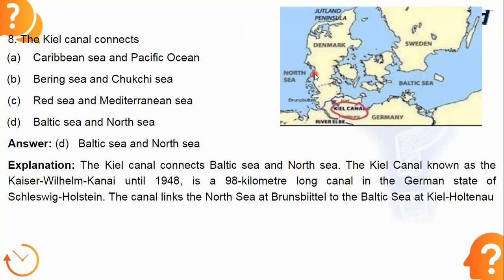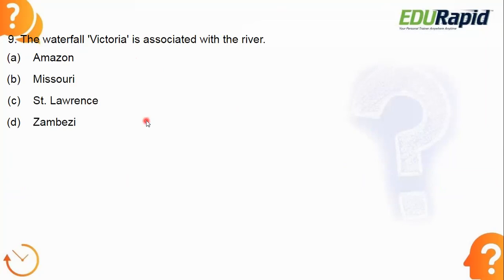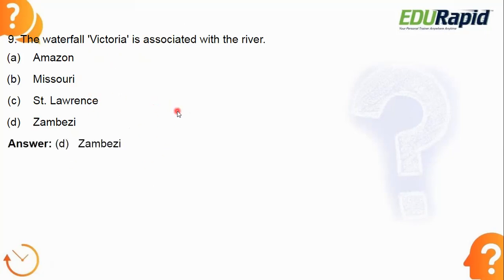Next: the waterfall Victoria is associated with which river — Amazon, Missouri, Saint Lawrence, or Zambezi? The hint is that it is located in Africa. The answer is option D — the Zambezi River. Victoria Falls is a waterfall in southern Africa on the Zambezi River. Although the name 'Victoria' might suggest Europe, it is related to Africa.